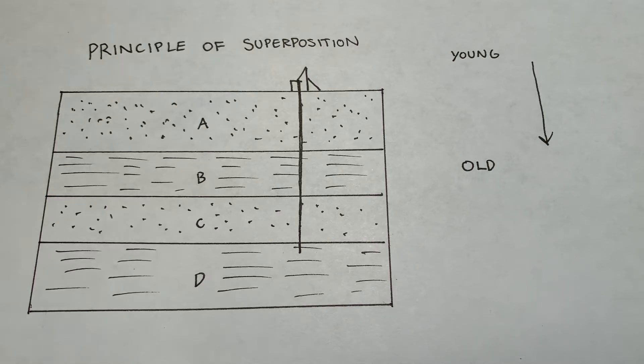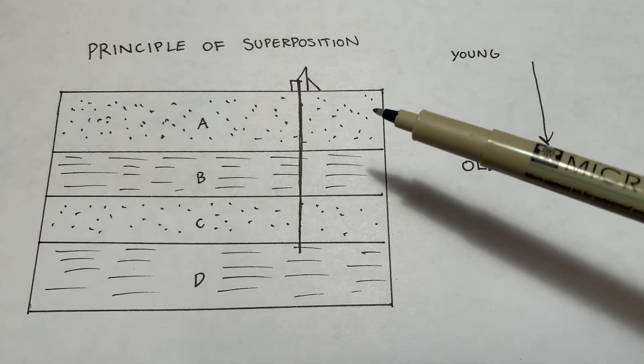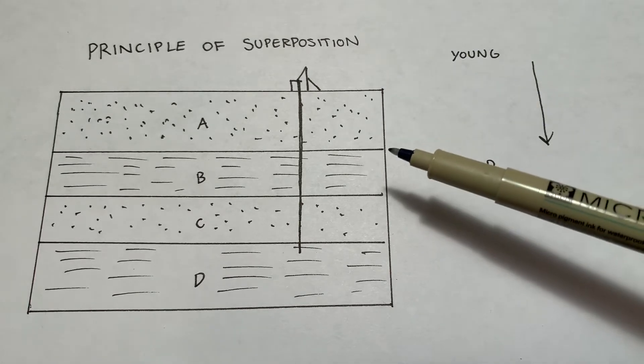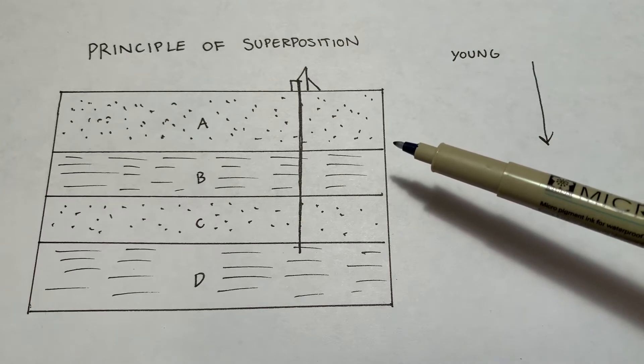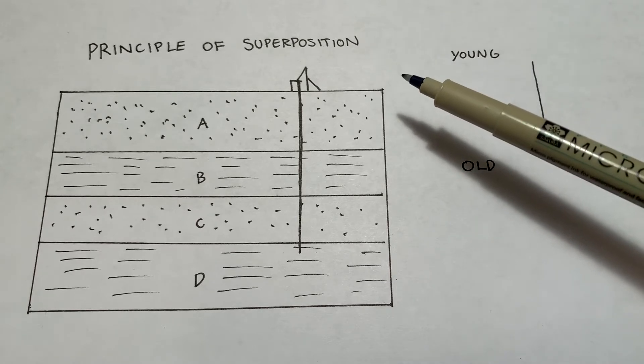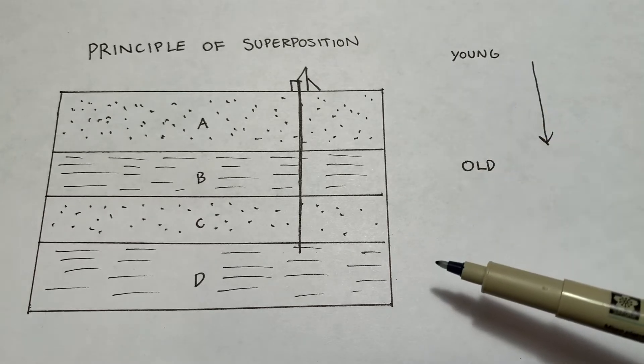There are a whole bunch of principles of superposition in different fields of science and engineering, but the one in structural geology is one of the simplest to understand. So if you have a bunch of sedimentary strata that have been deposited flat on top of each other, then the principle of superposition states that the ones on the top are going to be younger, the ones at the bottom are going to be older.